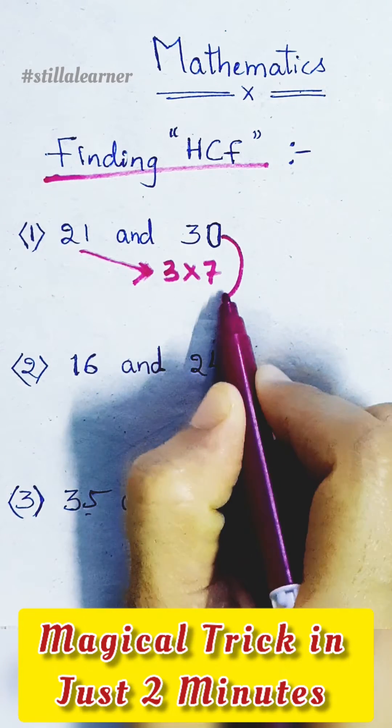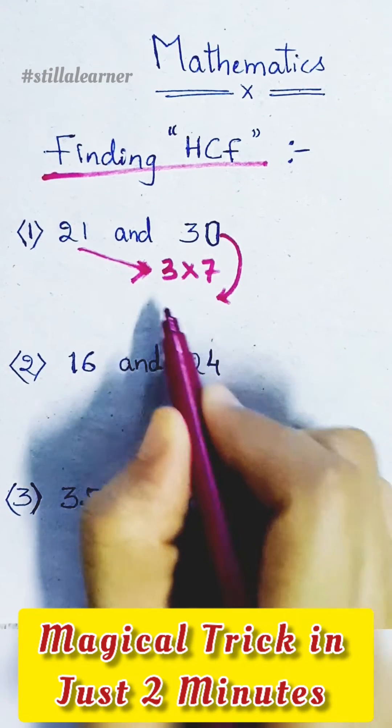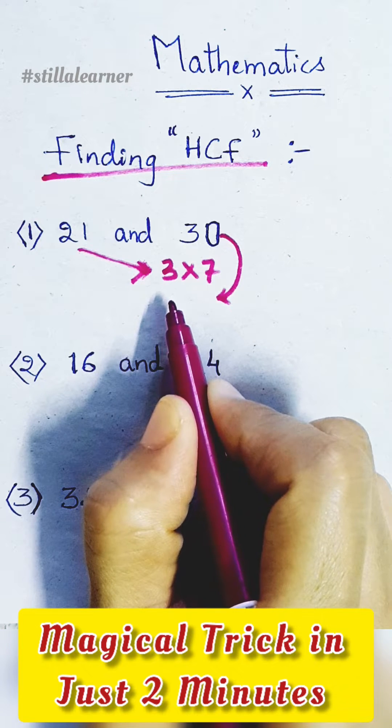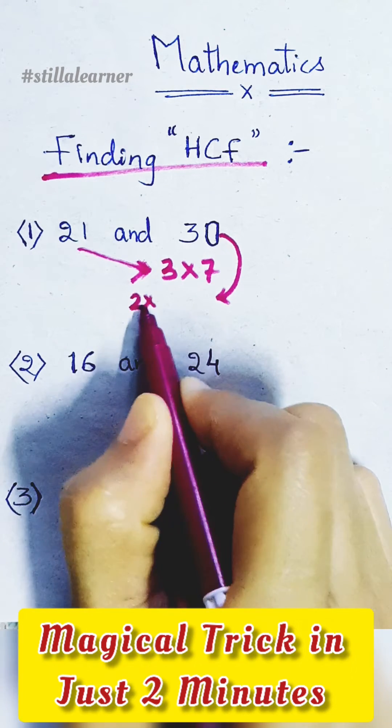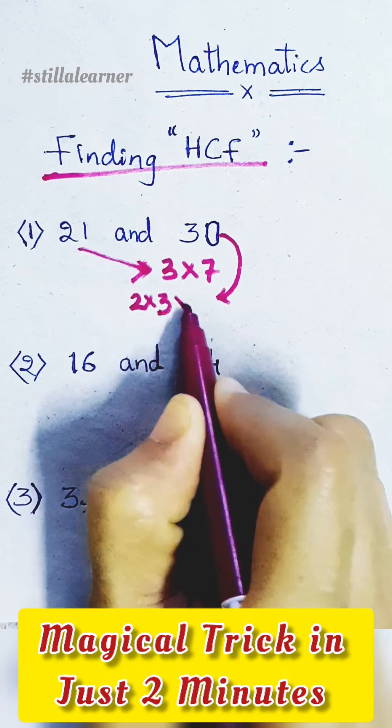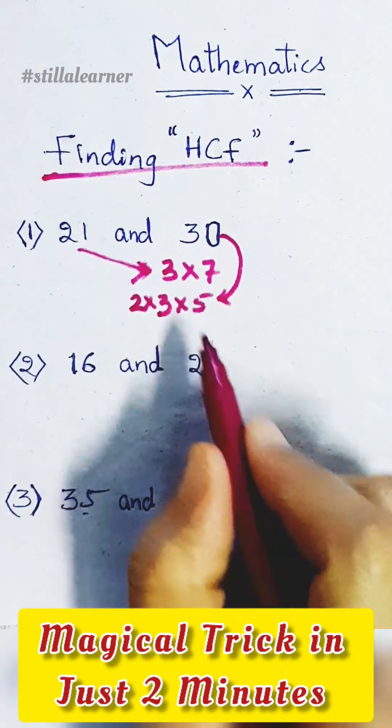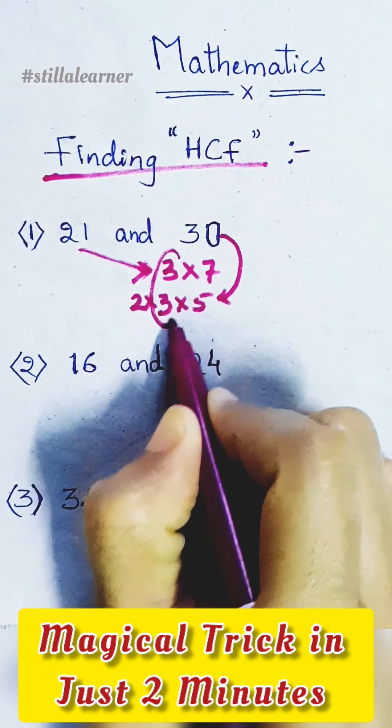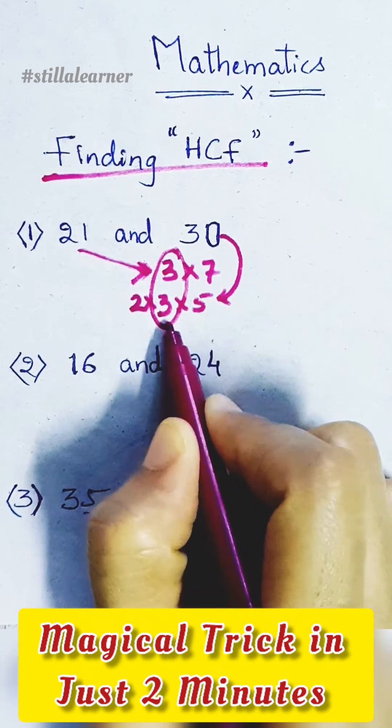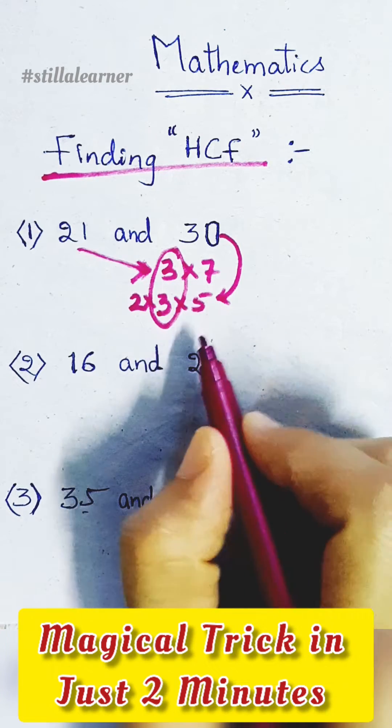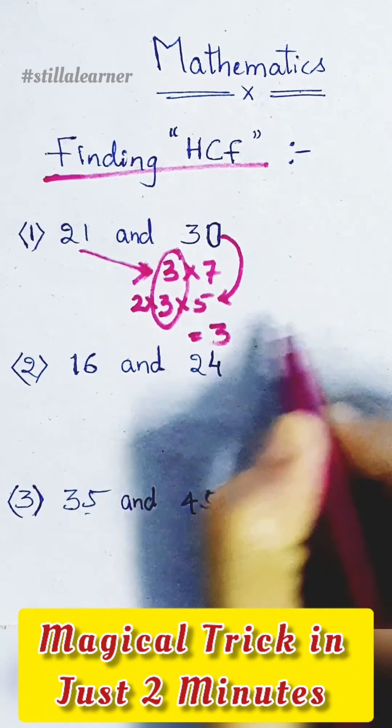Then we have to find the factors of 30. As I said before, start from table 2. The factors of 30 are 2 into 3 into 5. So 2 times 3 is 6, 6 times 5 is 30. Here, which factor is common? 3 is common. So 3 is the highest common factor of these two numbers, 21 and 30.